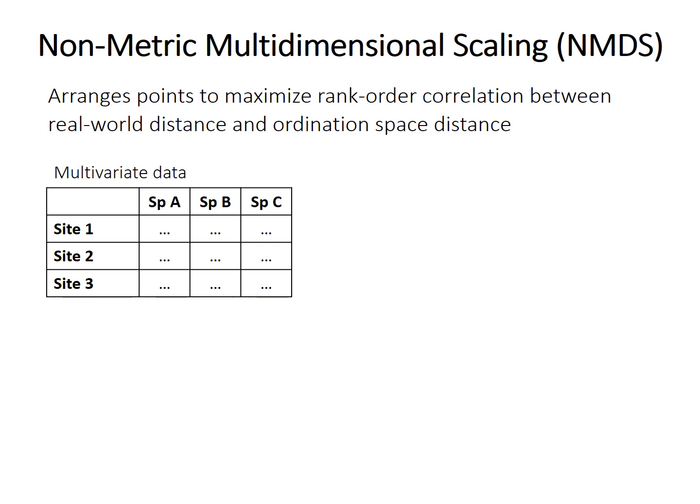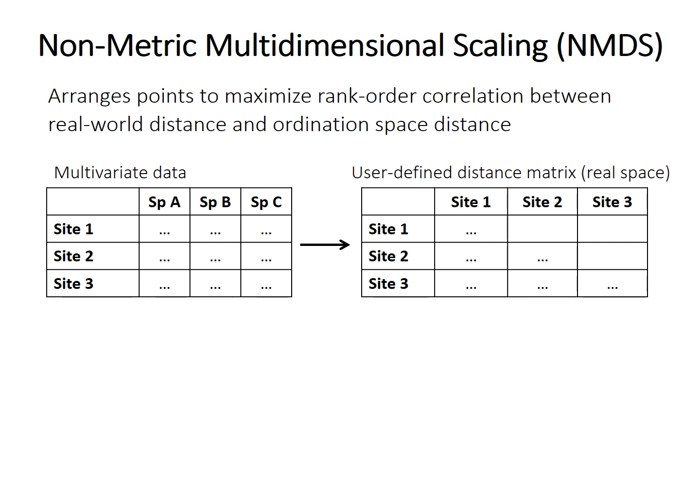Basically, NMDS arranges the points on the ordination plot in the way that maximizes the rank order correlation between the real-world distances and the distances in ordination space. You start out with the complete multivariate data set, which has measurements or counts of lots of things — here using species counts because this method is often used for this sort of data. You can choose your own appropriate distance measure, and then you calculate a matrix of distances between each sample or site. These distances are measured in the full multivariate space — like the 12-dimensional or 20-dimensional cloud of points.